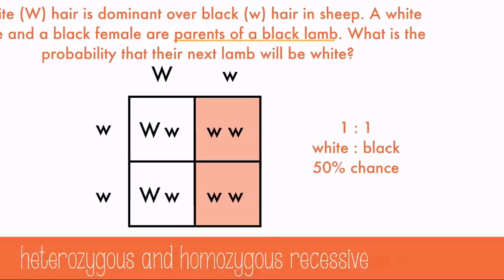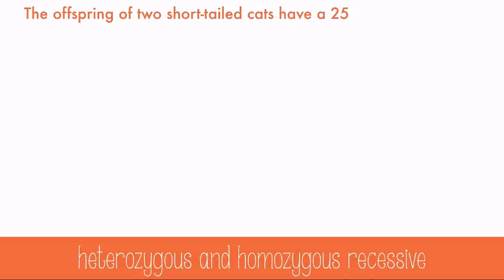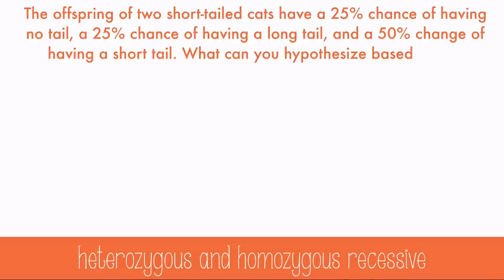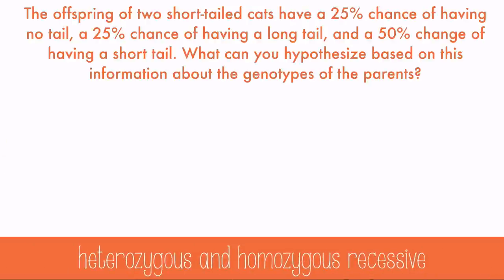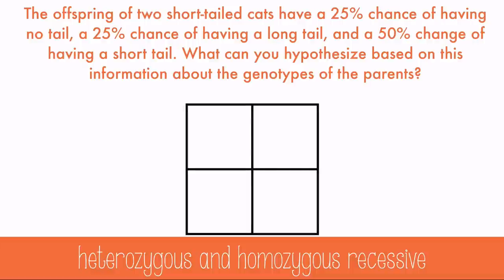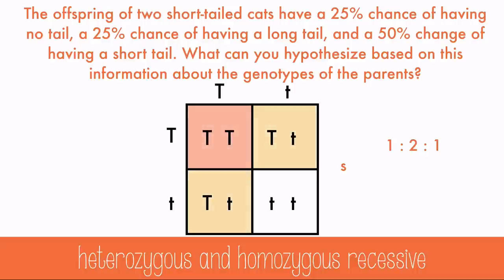Let's do one last one. The offspring of two short-tailed cats have a 25% chance of having no tail, a 25% chance of having a long tail, and a 50% chance of having a short tail. What can you hypothesize about the genotypes of the parents? The 25-50-25 pattern is common when there are two heterozygous parents, and the genotypic ratio matches the phenotypic ratio in the problem, so we can hypothesize that the parents were both heterozygous.